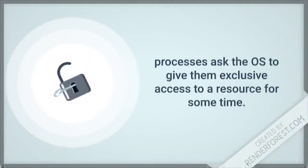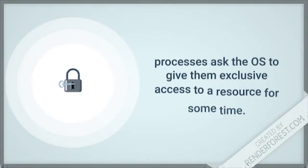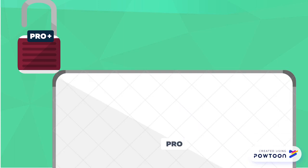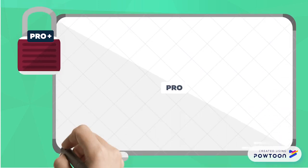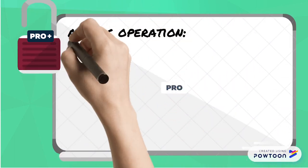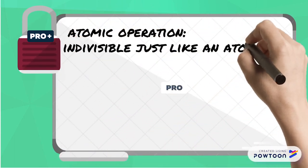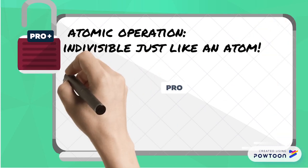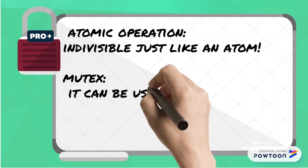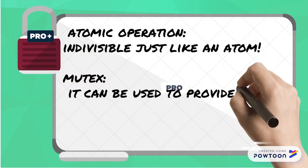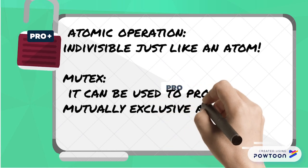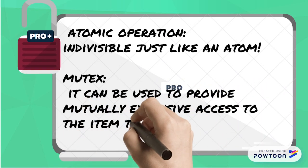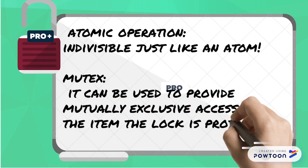Similarly, as the process runs, it may need to ask the operating system to give it exclusive access to a resource for some time. This is known as an atomic operation, which makes it indivisible, just like an atom. A lock is also sometimes called a mutex, since it can be used to provide mutually exclusive, or mutex, access to the item the lock is protecting.